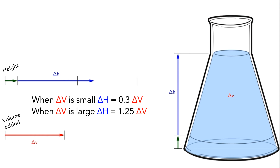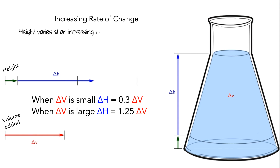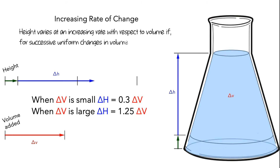This is what it means to have an increasing rate of change. In this scenario, we say that height varies at an increasing rate with respect to volume if, for successive uniform changes in volume, the corresponding changes in height increase. This might be a little complicated to sort out, so let's take a closer look.